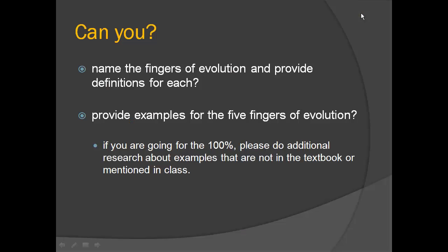Okay, now that you've seen all the whiteboards, are you able to name the fingers of evolution and provide definitions for each? Can you provide examples for the five fingers of evolution?